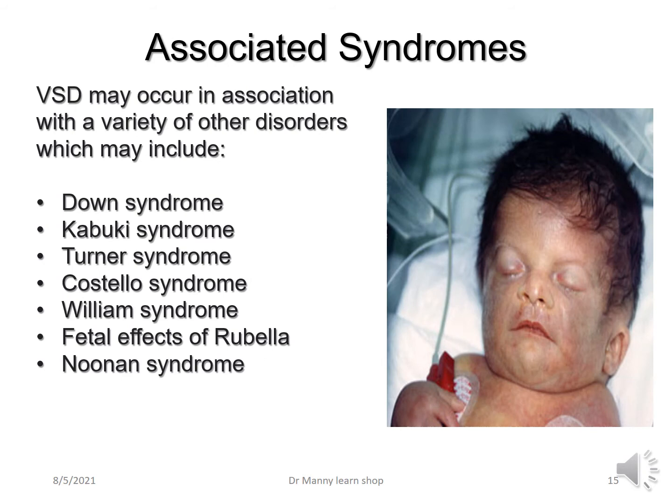Associated syndromes with VSDs may include: Down syndrome, which is the most common; Kabuki syndrome; Turner syndrome; Costello syndrome; Williams syndrome; fetal effects of rubella; and Noonan syndrome — but not limited to these.